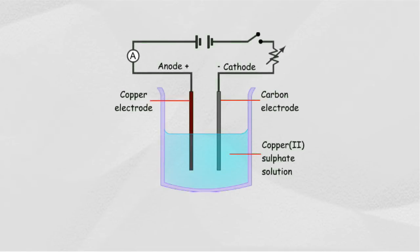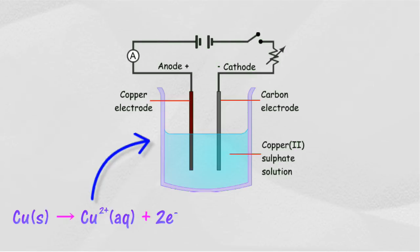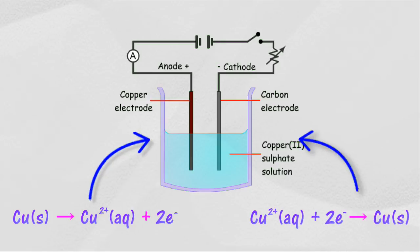For example, in the electrolysis of copper(II) sulfate solution with a copper electrode as the anode and a carbon electrode as the cathode: during electrolysis, copper atoms lose two electrons to form copper ions, and the copper electrode dissolves into the solution. At the cathode, copper(II) ions receive two electrons to form copper atoms. Thank you for taking the time to watch this.